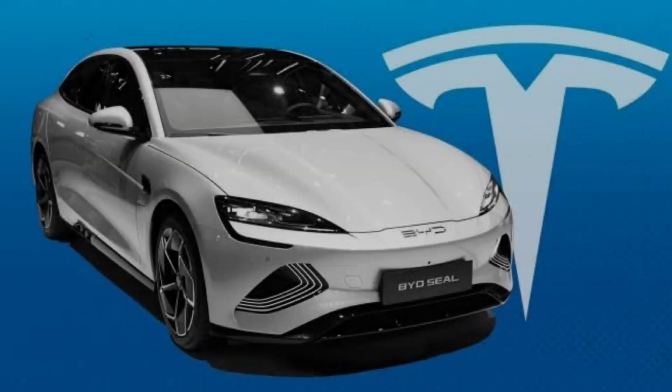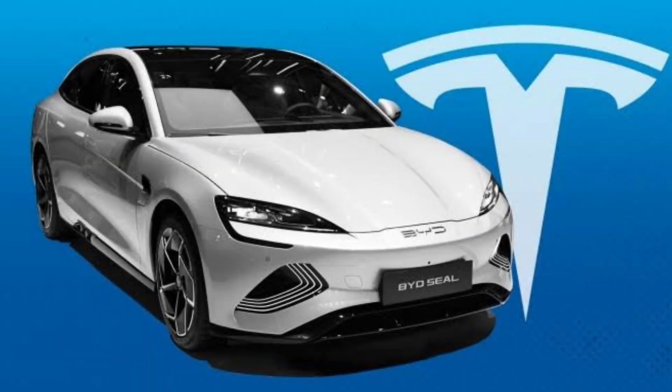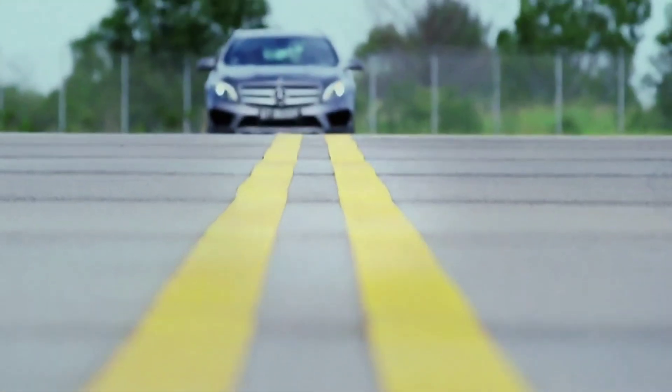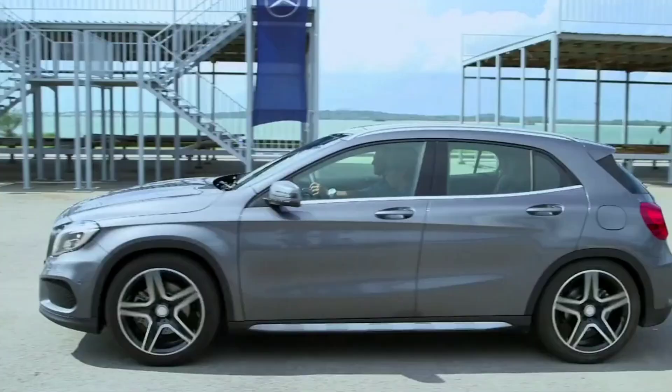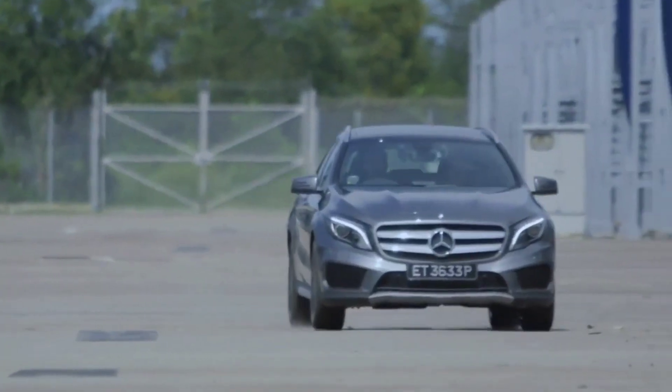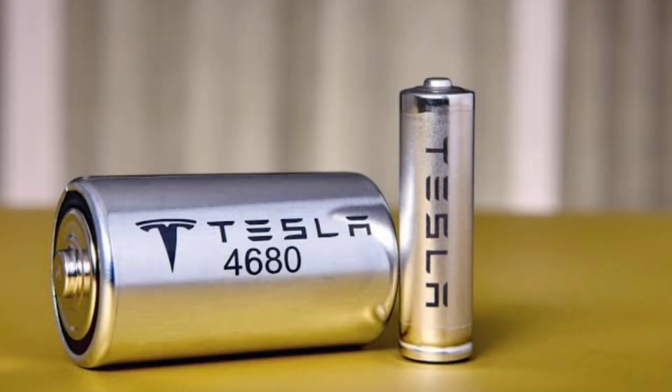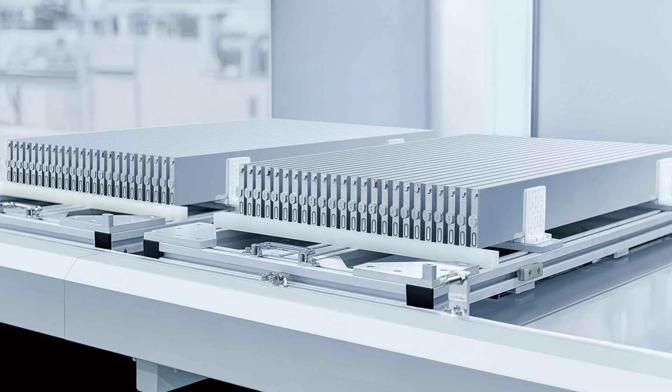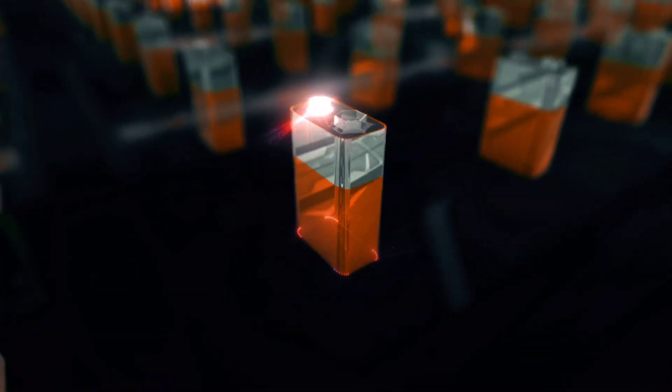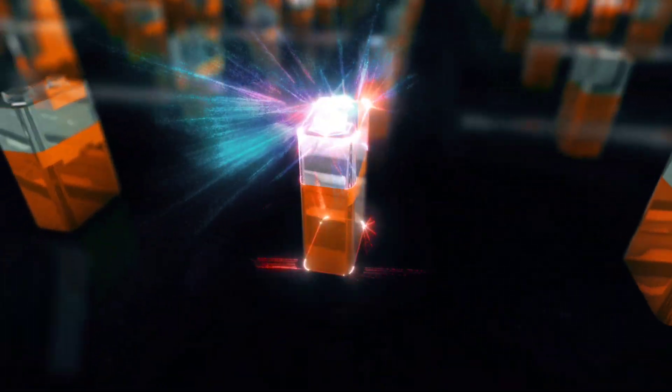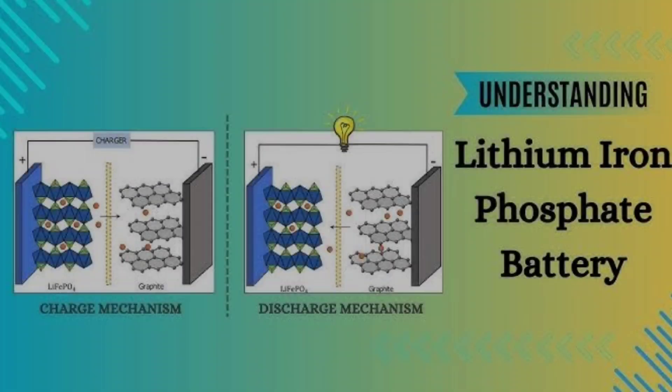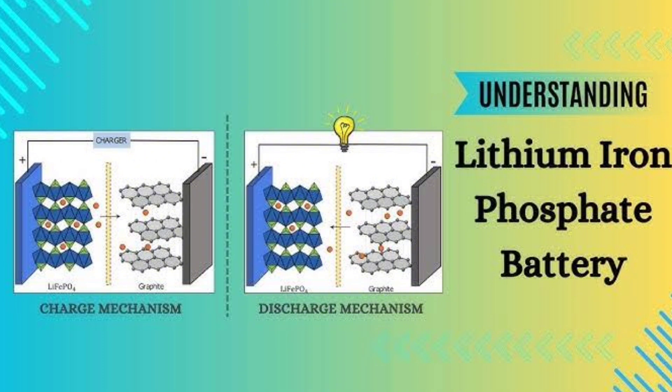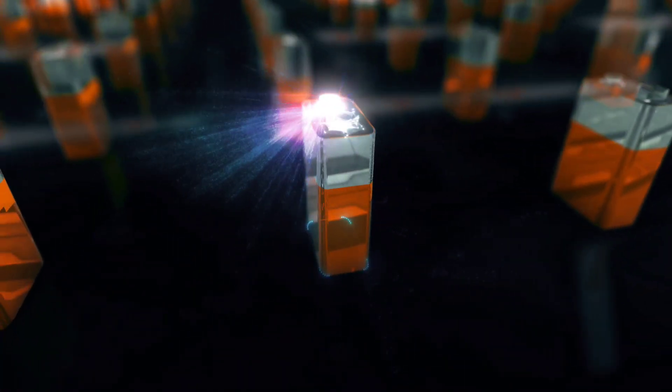On the other hand, BYD took a completely different approach. Instead of focusing on extreme performance, they prioritized safety, longevity, and cost-efficiency. Unlike Tesla's cylindrical cells, BYD's blade battery uses a flat, prismatic design, allowing for better space utilization. It also runs on lithium-ion phosphate chemistry, making it cheaper, safer, and extremely durable.